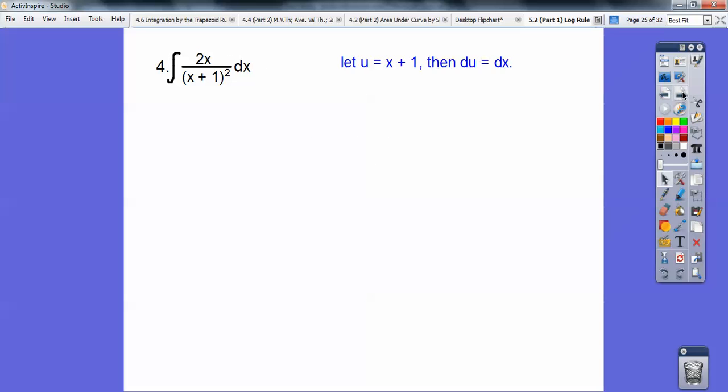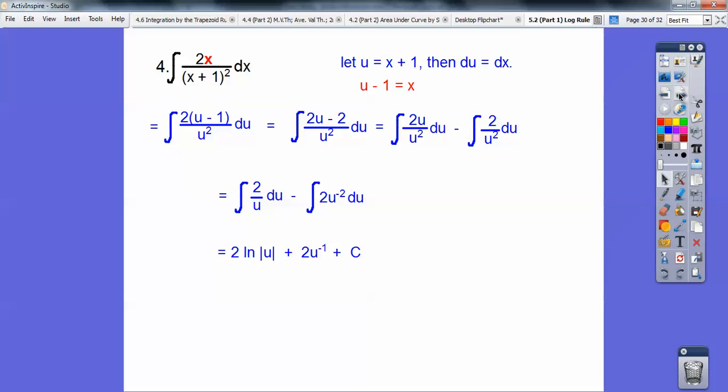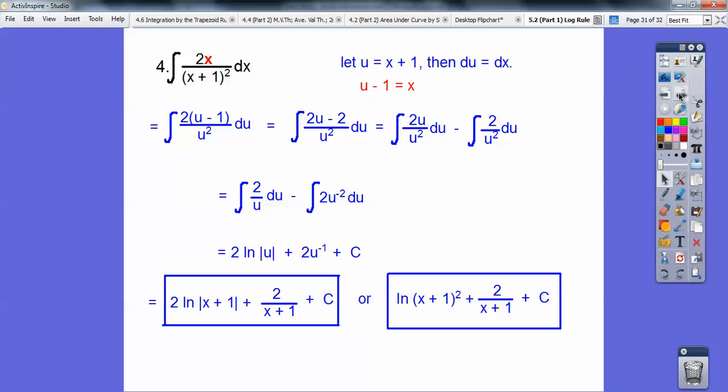On this one, let u be that denominator. When you differentiate, you get du equals dx, but there's still an x. What I'm going to do is solve for this x and subtract 1 on both sides. I'll put that in right there, so this u minus 1 goes there. There's my u minus 1 over u squared, du. Distribute that 2 through, you get that. It takes you to that, there's my natural log. You can put it in that exponent. Nice and easy.